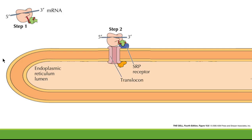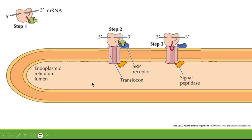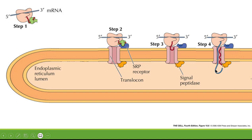Step two produces a conformational change in the structure of the translocon present on the ER membrane, and the protein enters inside the translocon. When the protein enters inside the lumen, the signal peptidase is going to cleave the signal sequence, and the rest of the protein will be present inside the endoplasmic reticulum lumen.